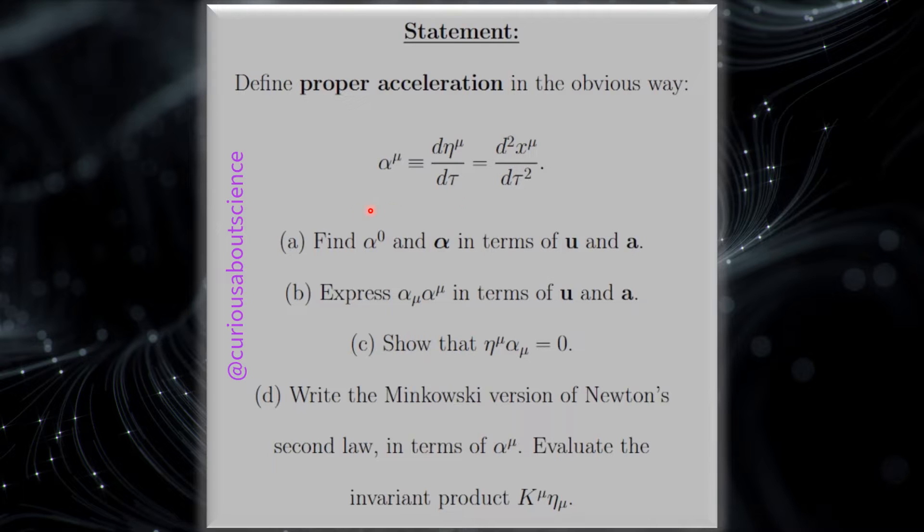So for part A, what we want to do is find alpha zero and alpha. Zero being temporal, and the rest, one, two, three, being position or spatial, in terms of the ordinary acceleration and ordinary velocity and ordinary acceleration.